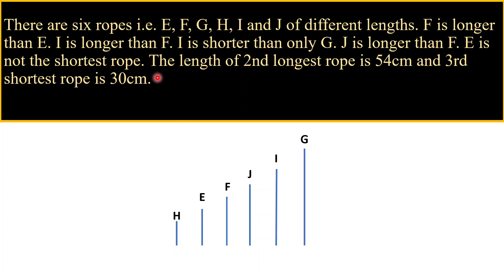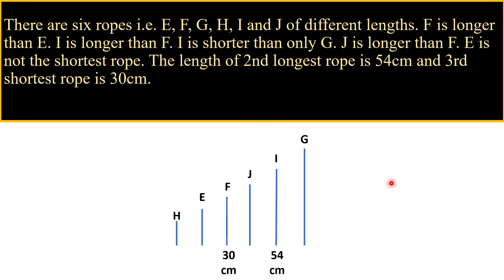The length of the second longest rope is 54 centimeters. As you can see, the second longest rope is rope I, so the measurement of rope I is 54 centimeters. The third shortest rope is 30 centimeters — the third shortest rope is rope F, so the measurement of rope F is 30 centimeters. Third shortest means: first shortest, second shortest, and F is the third shortest. I hope you understood how we count second longest and third shortest.